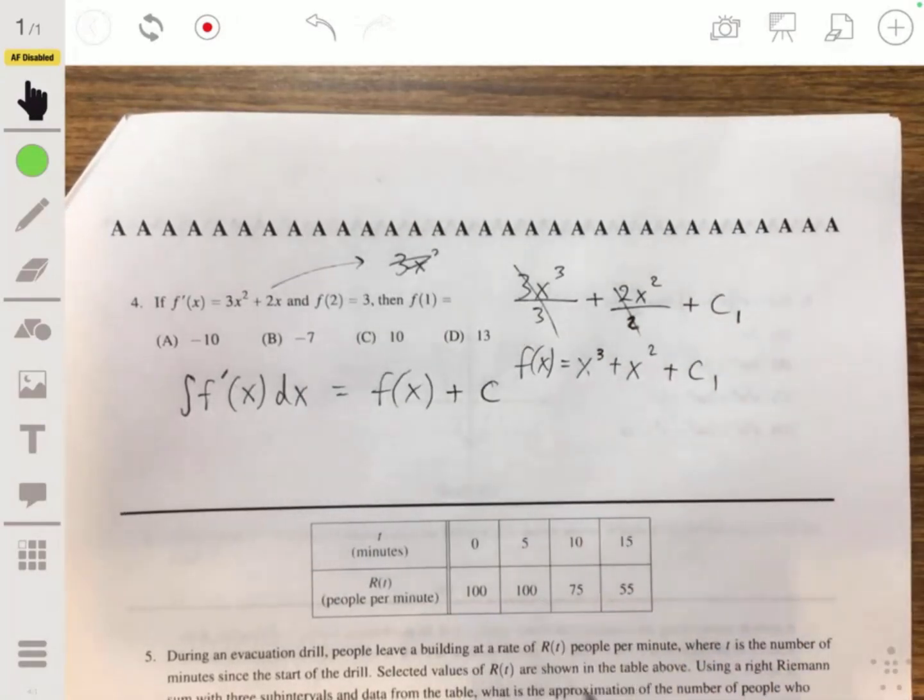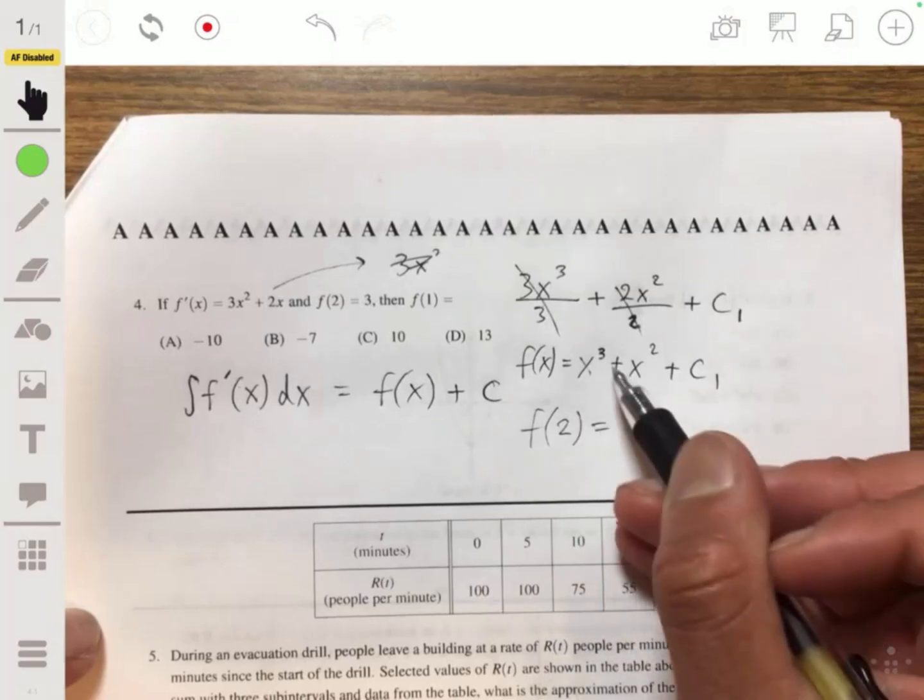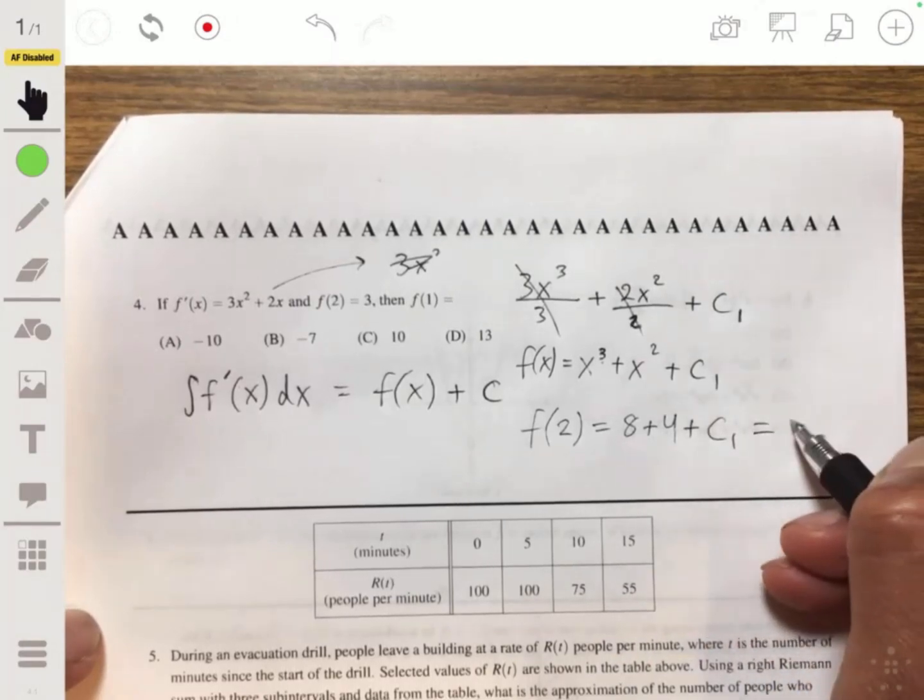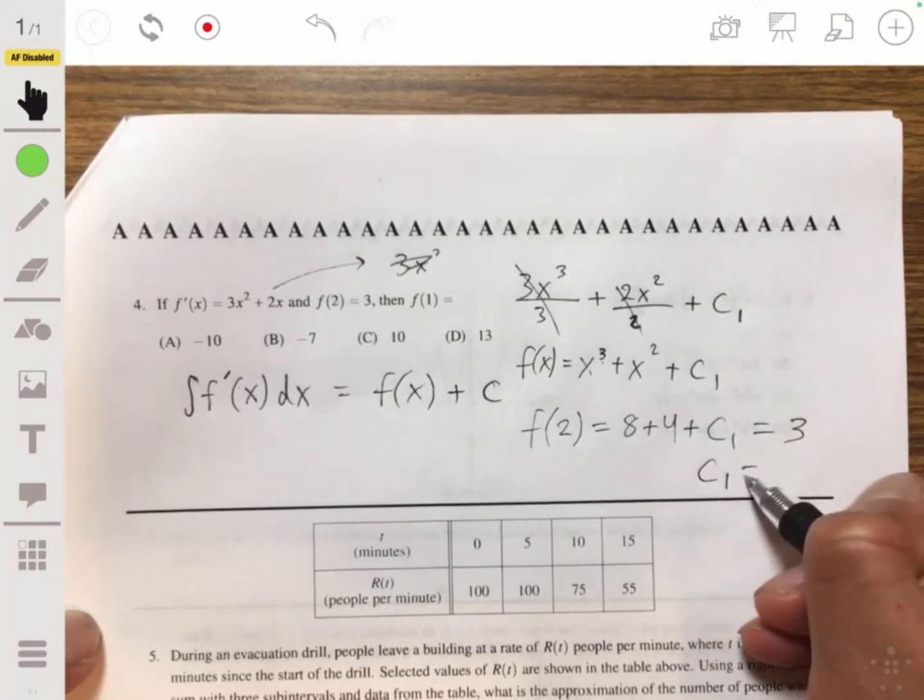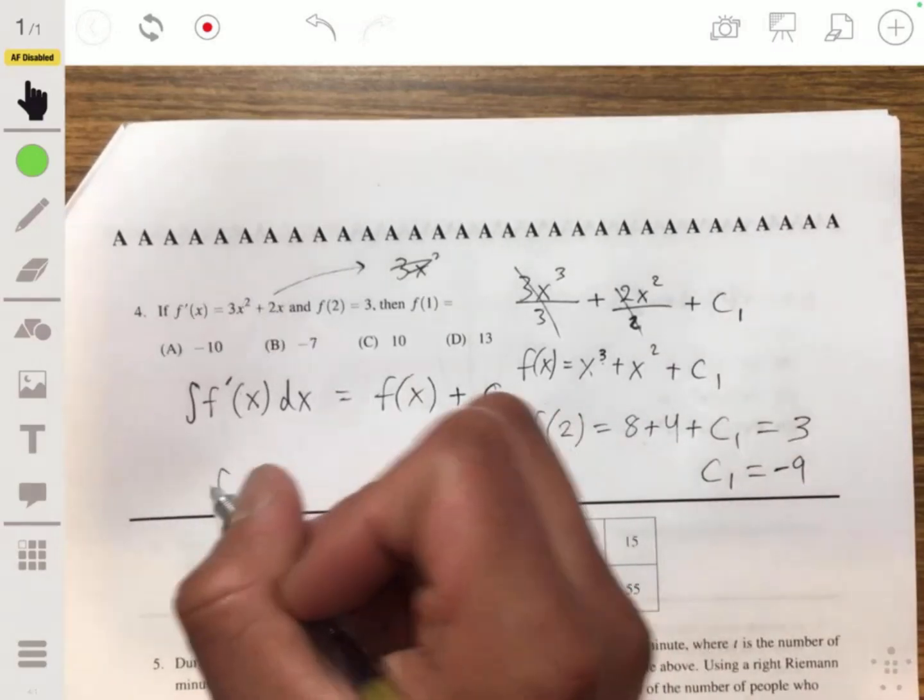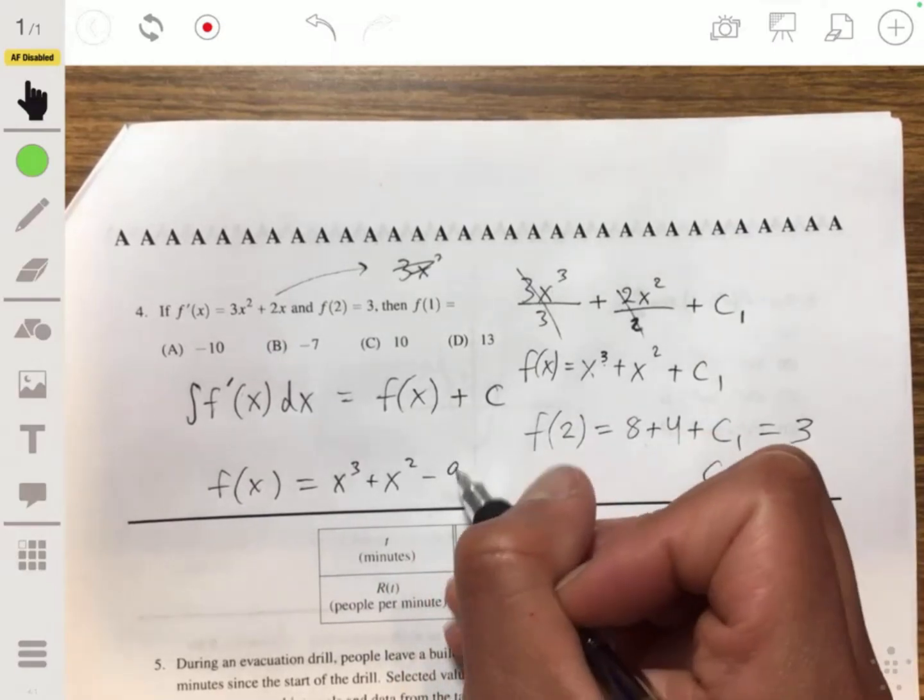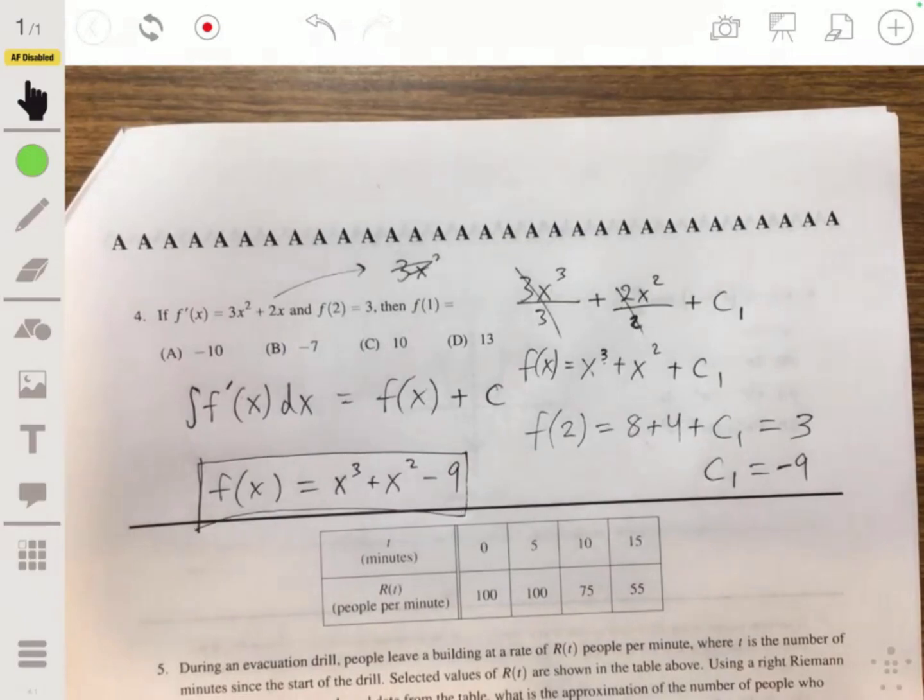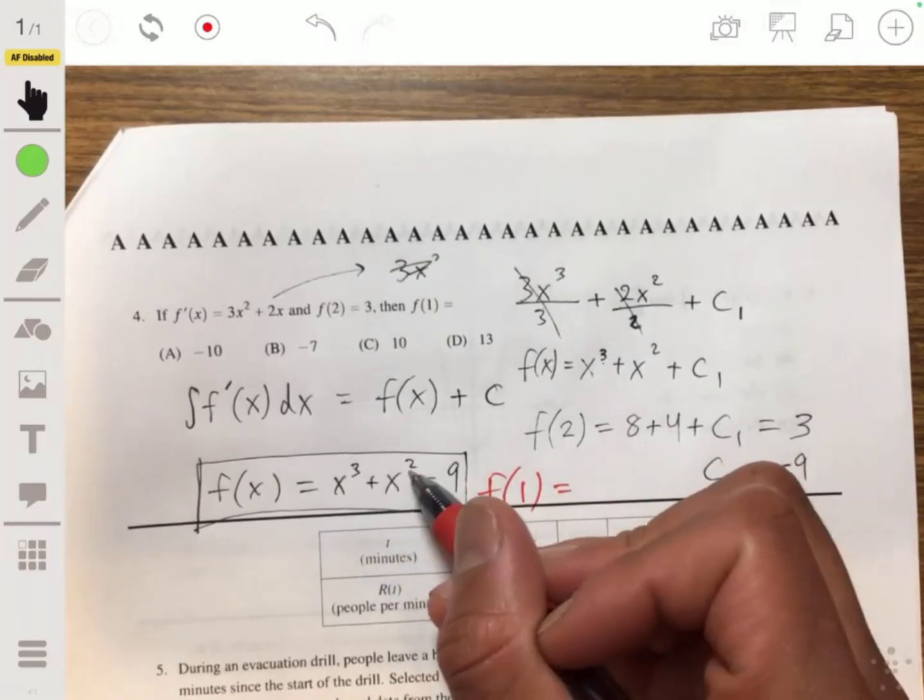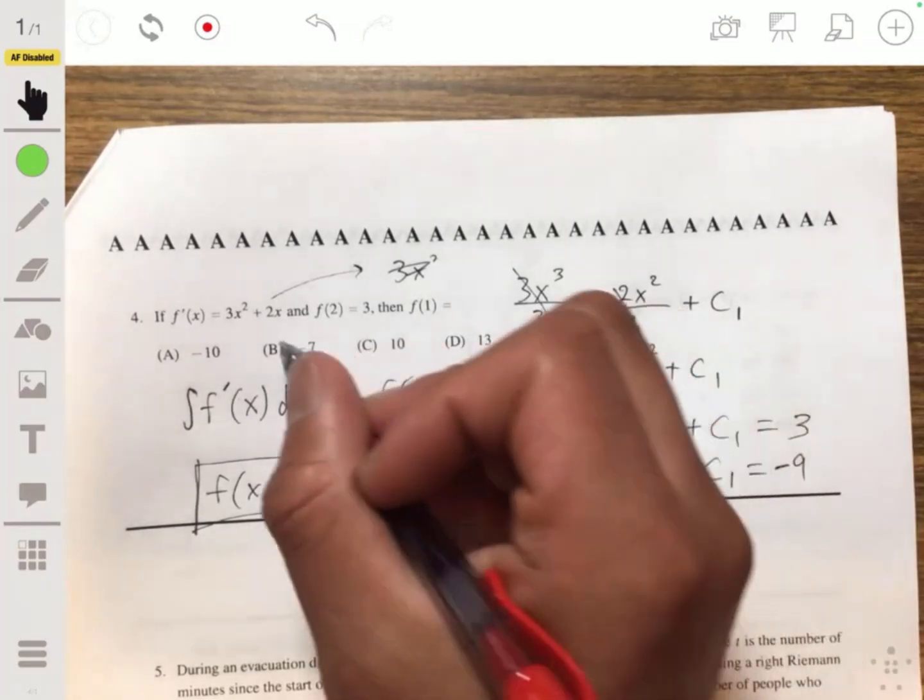Now, we know that f(2) is 3, so when we plug in 2, we should get 3. So we get 8 + 4 + c1. This will give us 3. This is 12, so then we know c1 is going to be -9. So then f(x) is then going to be x^3 + x^2 - 9. And so f(1) will simply be 1 + 1 - 9, so then it'll just be -7. And so the answer will be B.